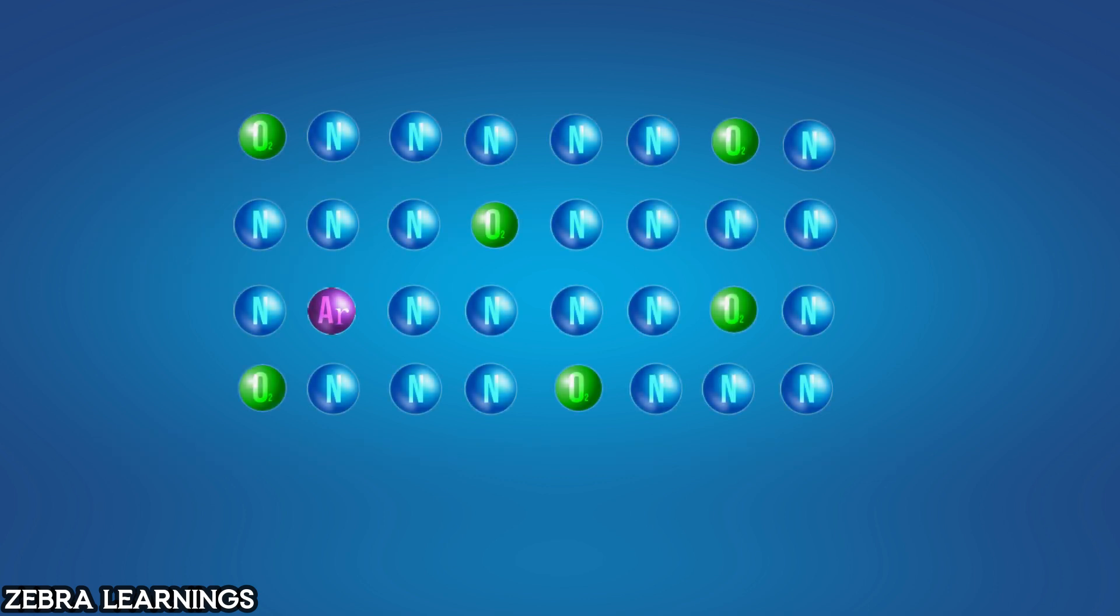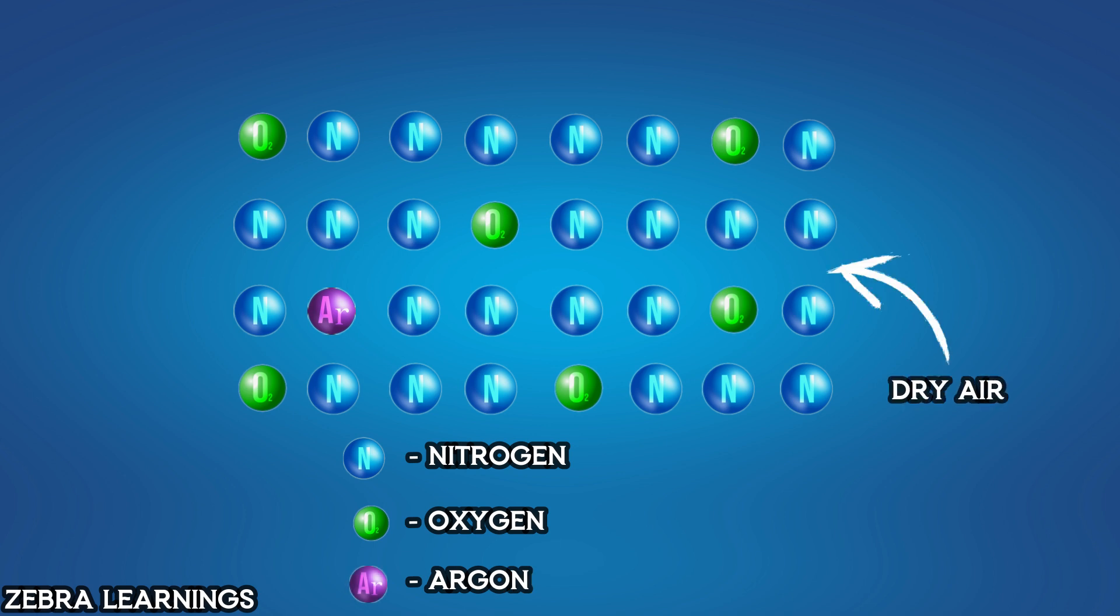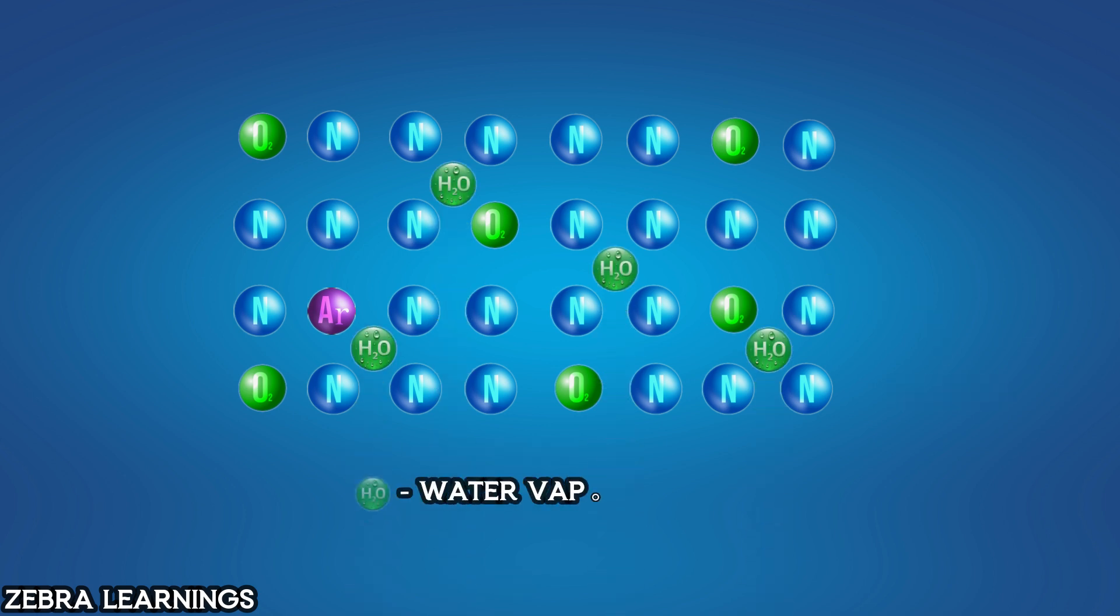Air without water vapor, containing only nitrogen, oxygen, and argon, is called dry air. Air that has water vapor mixed in it is called moist air. However, in practice, dry air does not exist anywhere. There will always be some amount of water vapor mixed in the air.